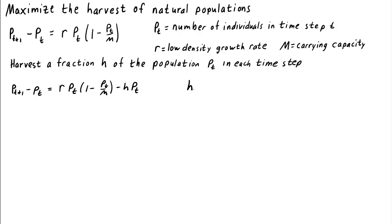You can think of h as harvesting effort. If you don't put any effort in, then h is equal to zero and you won't get any harvest. On the other hand, if you put in an enormous effort, the population size is going to shrink a lot due to subtracting this term off the equation. And if the population size shrinks too much, you won't harvest very much either. In fact, what if it dies all the way out? You'll have zero individuals. In that case, you might have a large harvest at the beginning, but you won't have a sustainable harvest.